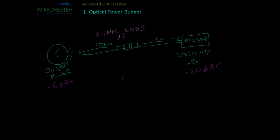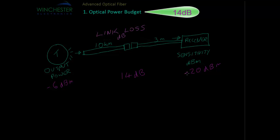So with a receiver sensitivity of minus 20 dBm and an optical output power of minus 6 dBm, our optical power budget is 14 dB. This is the maximum amount of loss we can have in our link and still have a receiver operational. Of course we need to have some kind of margin to make sure we're not operating right at the limit of the receiver, and that margin is usually 3 dB.